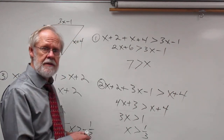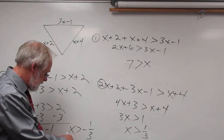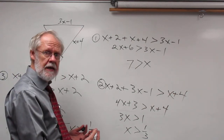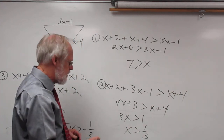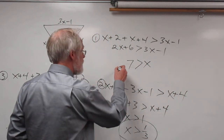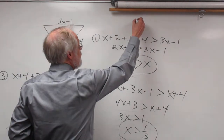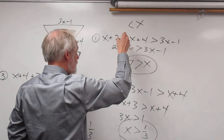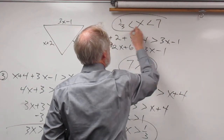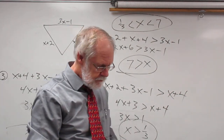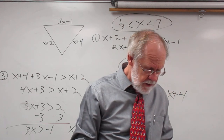Now, looking at these three results: x must be less than 7, x must be greater than one third, and x must be greater than negative one third. The most restrictive lower bound is x greater than one third, so we use that one combined with x less than 7. The final answer is x is greater than one third and less than 7. Thank you and I'll see you next time.